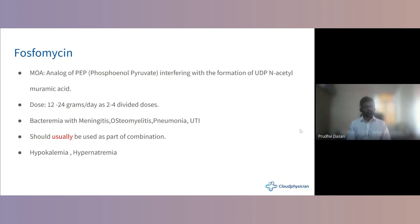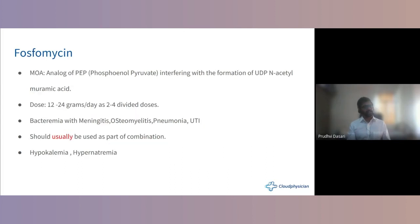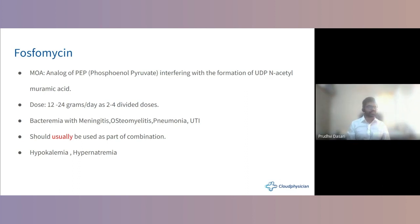Fosfomycin is an analog of phosphoenolpyruvate. It interferes with the formation of N-acetylmuramic acid — the building block of the bacterial cell wall — causing the organism to crumble. Dosage is 12 to 24 grams per day in two to four divided doses. It is used in bacteremia, meningitis, osteomyelitis, pneumonia, and UTIs, usually in combination. Common side effects include hypokalemia. Although not always listed, hypernatremia is commonly seen clinically with fosfomycin.